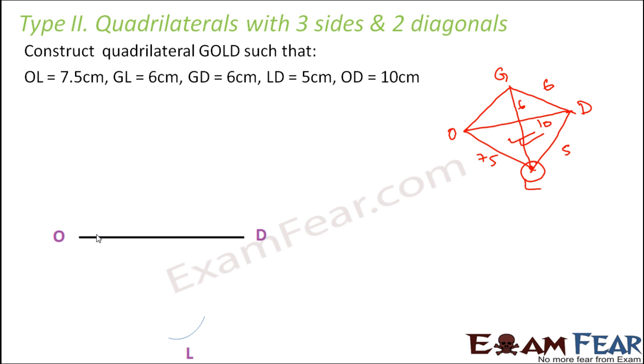So from point O we draw an arc at a distance of 7.5 cm, similarly from point D we draw an arc at a distance of 5 cm and then we see that these two arcs they meet at a point. So we join this point from O as well as D. So that's how we are able to construct one part, one half of the quadrilateral is almost done. So now let's try to do it for the other side.